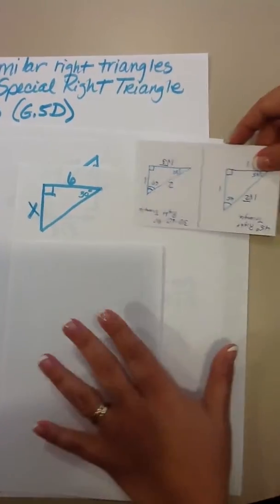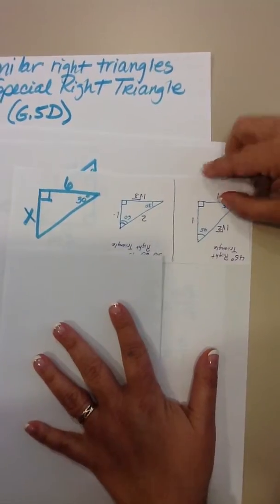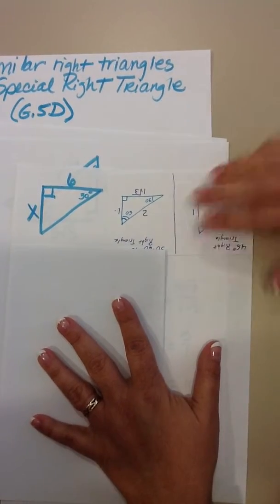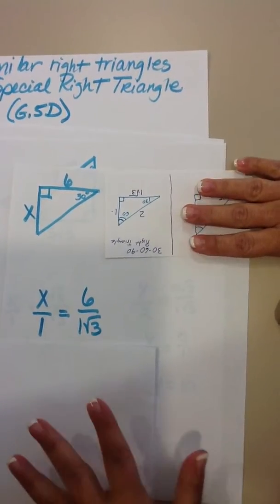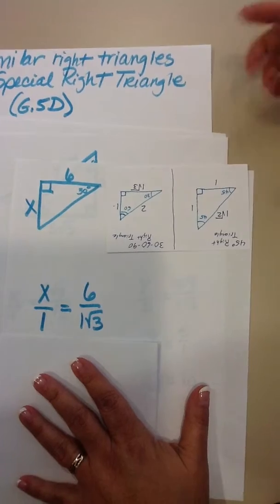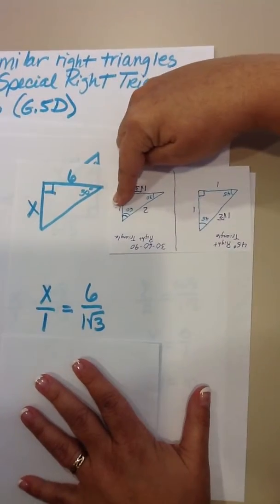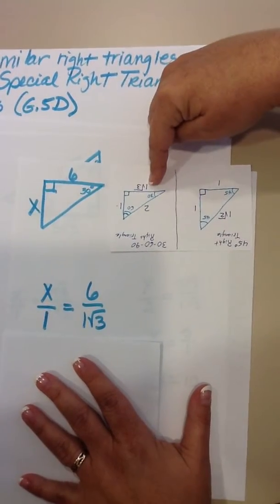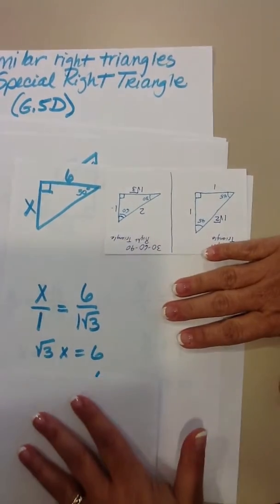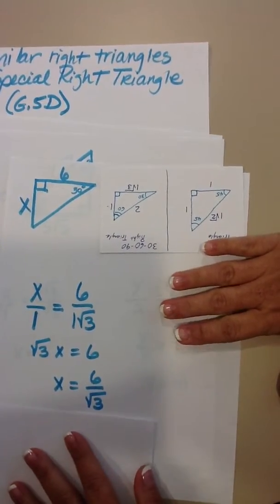It's an easy thing, if the triangles aren't oriented the same way, to just turn the index card around so that it matches, and then it's an easy thing for the kids to match up the proportion. x goes to 1 as 6 goes to 1 square root of 3, and then they solve the proportion for their answer.